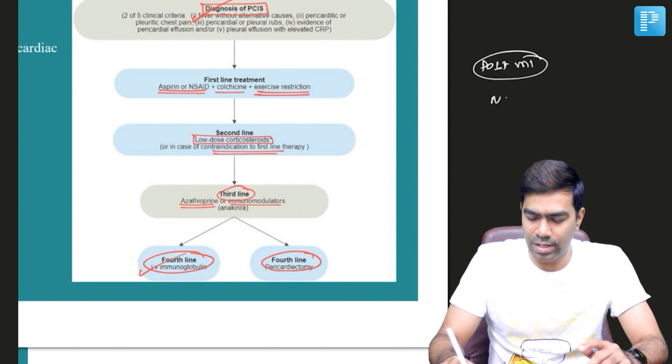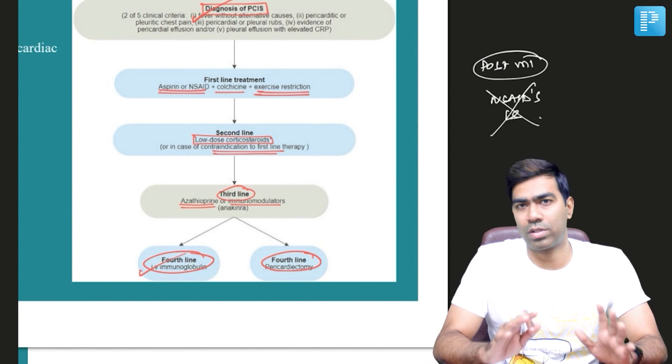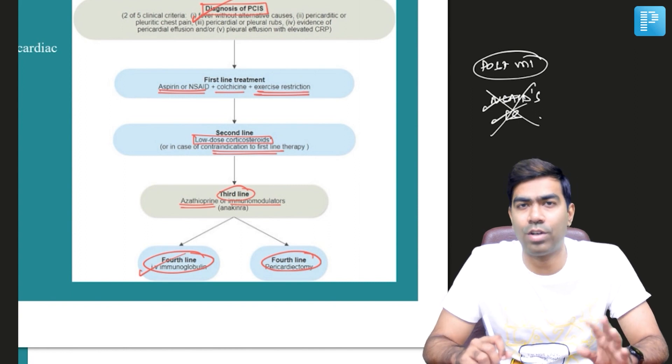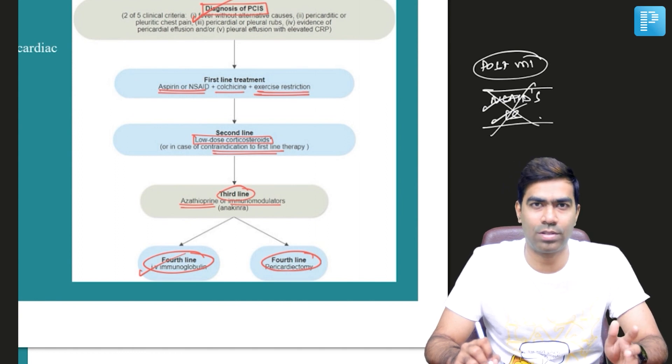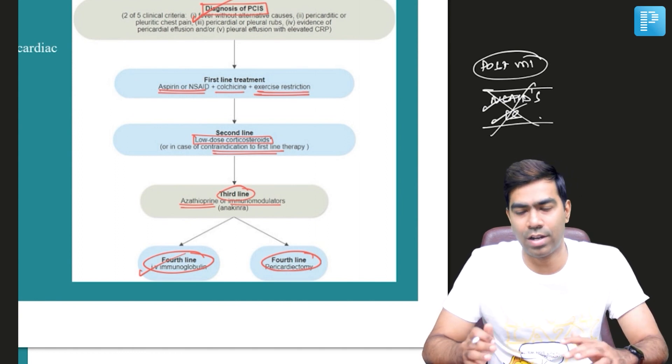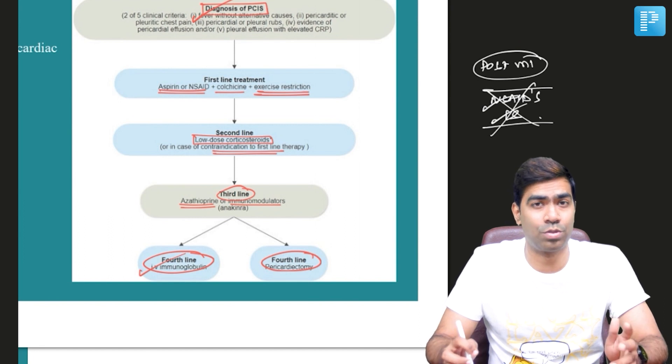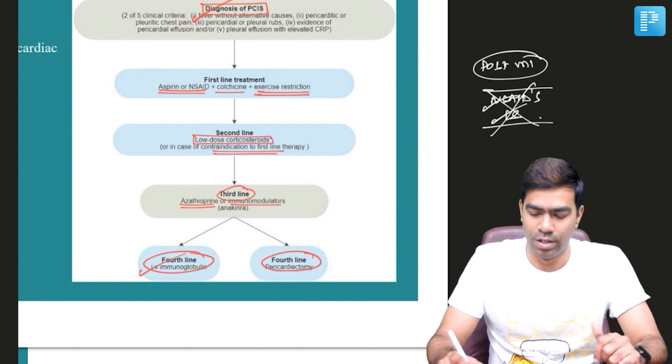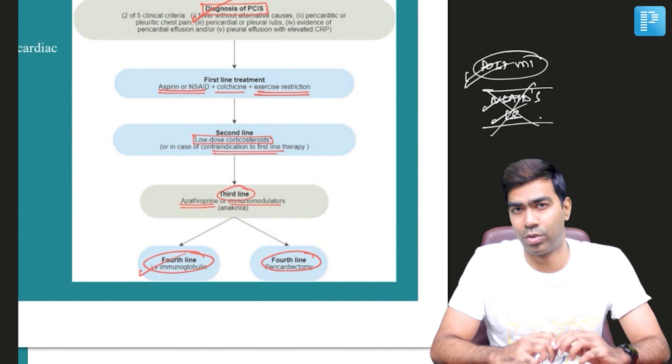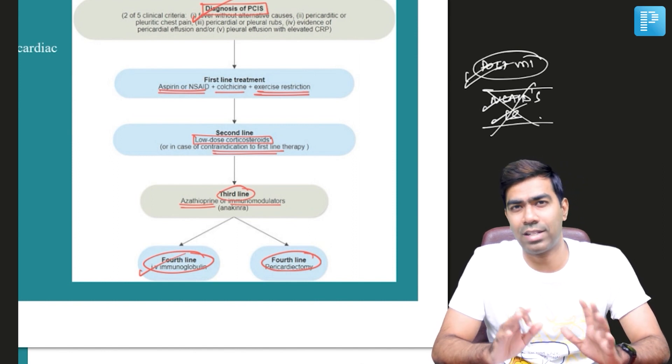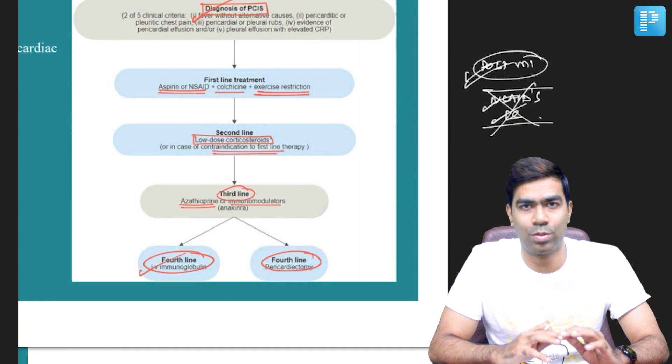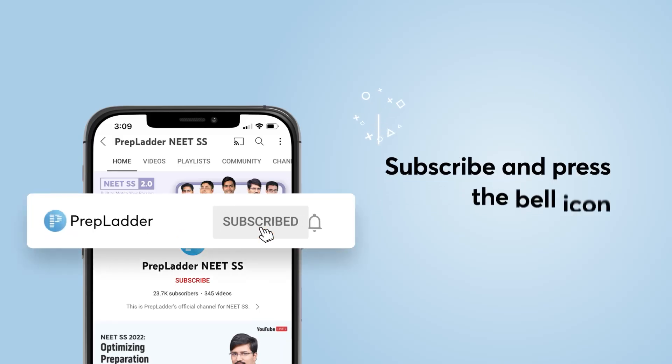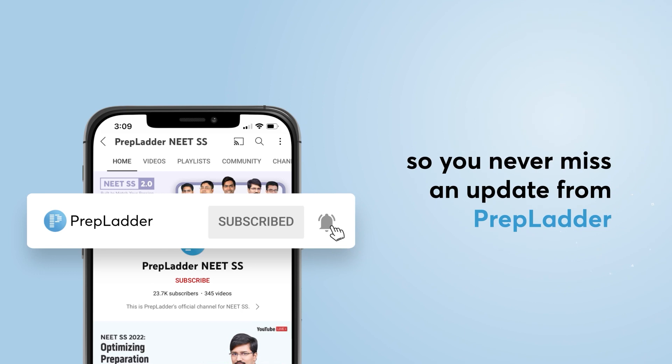But one important point which I want to tell is the fact that in post-MI pericarditis, please avoid NSAIDs and corticosteroids, especially in early post-MI pericarditis. NSAIDs and corticosteroids are absolutely contraindicated. That is because NSAIDs and corticosteroids will impair the healing process and will prevent the conversion of the infarcted area into scar tissue. So they are going to predispose to the risk of development of ventricular free wall rupture. So that is why in post-MI pericarditis, the only treatment is going to be aspirin. Just increase the dose of aspirin. That's going to be more than enough. Please avoid NSAIDs and corticosteroids, especially in the early post-MI pericarditis. Subscribe and press the bell icon so you never miss an update from PrepLadder.